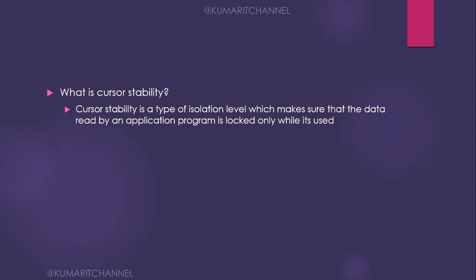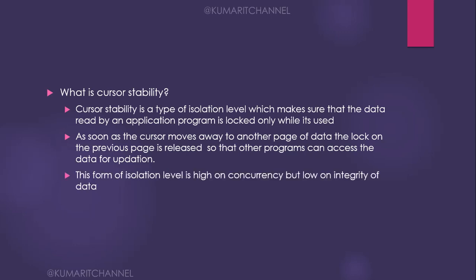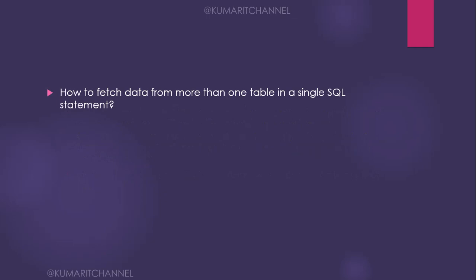What is cursor stability? Cursor stability is a type of isolation level which ensures that data read by an application program is locked only while it is being used. As soon as the cursor moves away to another page of data, the lock on the previous page is released so other programs can access the data for updates. This isolation level is high on concurrency but low on data integrity. Other levels include repeatable read, but cursor stability is the most commonly asked.